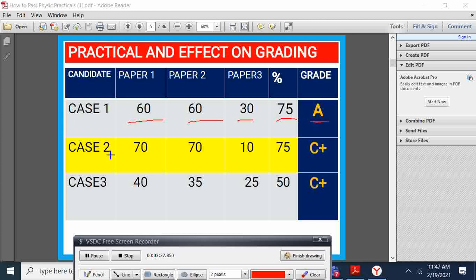Case 2, a student gets 70 in paper 1, 70 in paper 2, but in paper 3, this student fails and gets 10. The total is 150 and their score is 75, but this student cannot score beyond a C plus because the student has failed in paper 3.